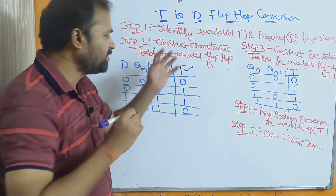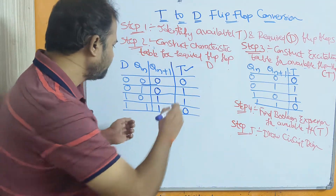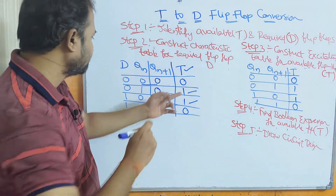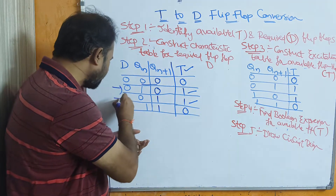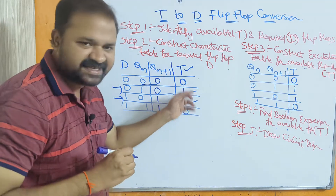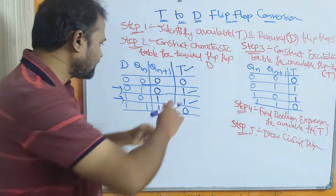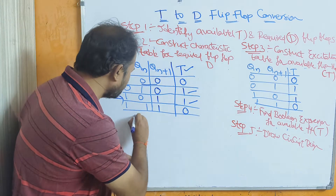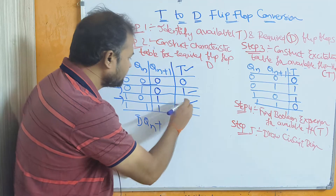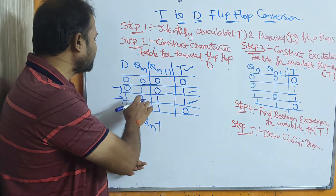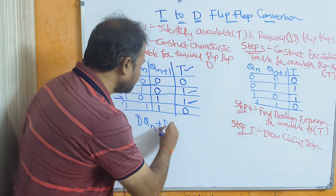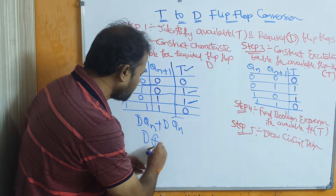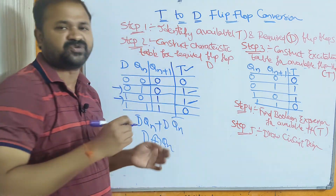Step 4 is to find the Boolean expression for the available flip-flop, that is the T flip-flop. Observing the table, T value is 1 in two occasions: when the inputs are 0,1 — which gives D̄·Qn — and when the inputs are 1,0 — which gives D·Q̄n. So we can write T as D exclusive-OR Qn, which is the formula for the exclusive-OR of D and Qn.